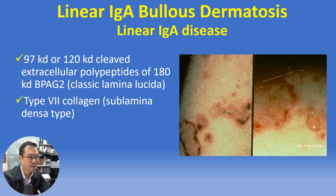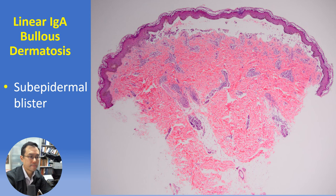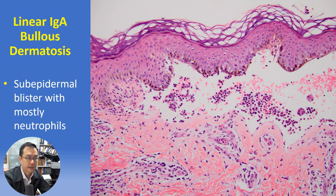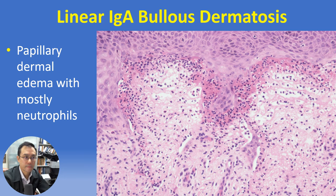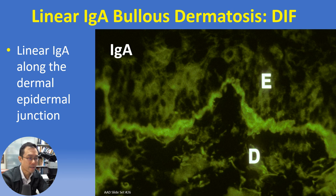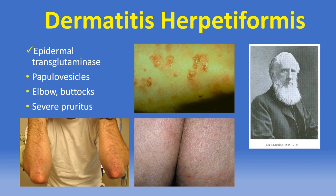At scanning magnification we can clearly see a subepidermal blister that is somewhat sparsely inflammatory but on closer inspection near the edge of the blister contains many inflammatory cells, mostly neutrophils, sometimes in conjunction with marked papillary dermal edema. The findings on DIF are essentially identical to those of pemphigoid except that instead of C3 and IgG, it's IgA.